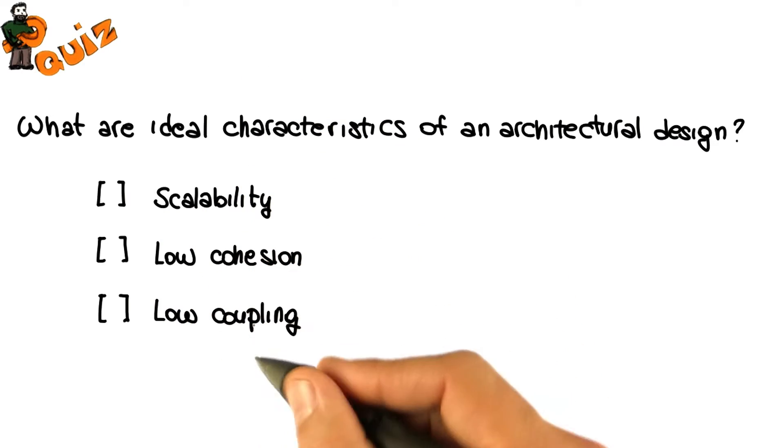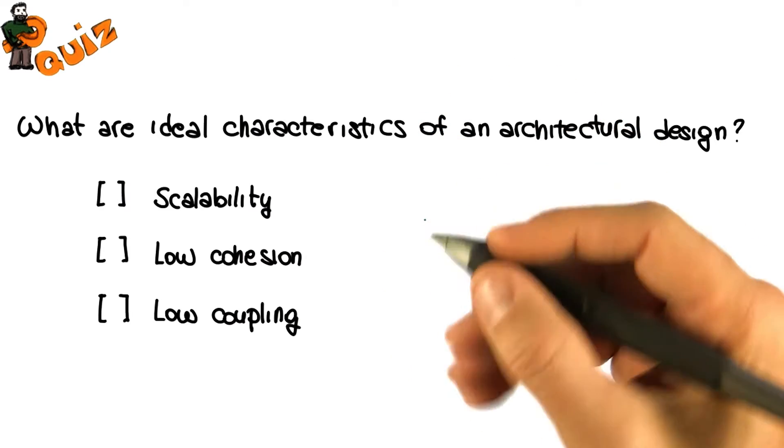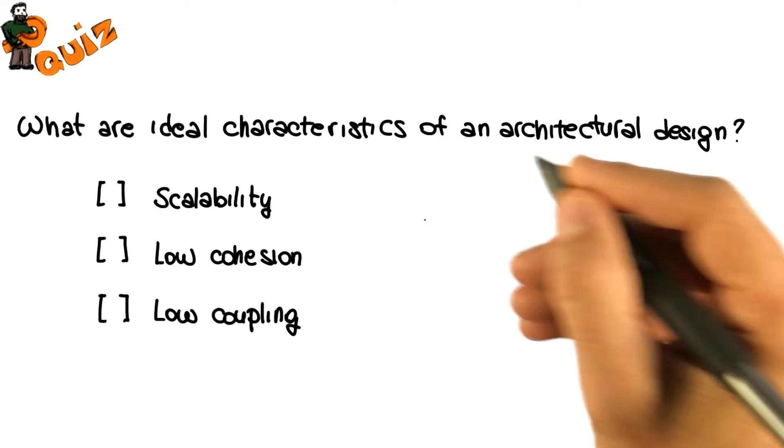So let's look at these three characteristics one by one. Scalability for a software architecture is its ability to handle the growth of the software system.